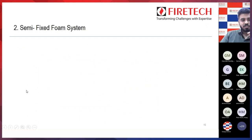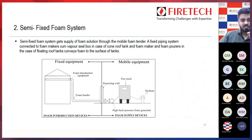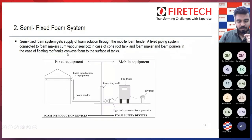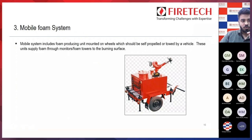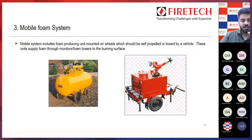Second is the semi-fixed foam system. In the semi-fixed foam system, your discharge devices are fixed, but your storage and proportioning device is movable — it is mobile equipment which is portable. You need to bring your mobile foam unit, connect it, and use it for suppression of the fire. Third is your mobile foam unit, which is a mobile system including a trolley mounted foam monitor, mobile foam unit, or water-foam monitor — all portable types you can bring to the fire scene.